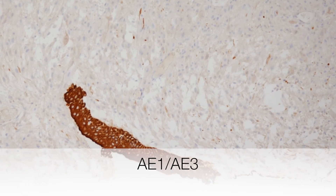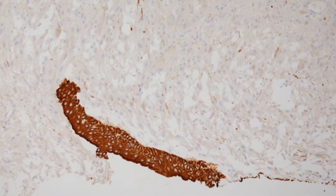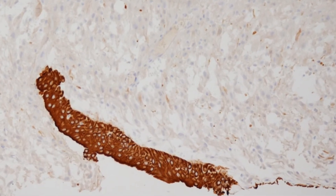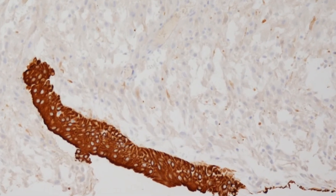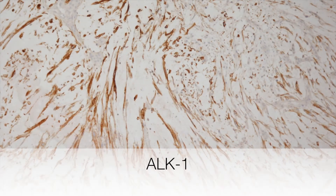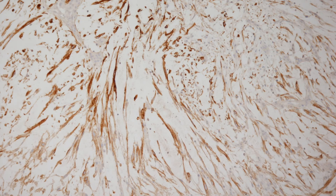This is the AE1/AE3 stain. You can see that the urothelium is positive. And here is the stain that gives away the diagnosis — it is the ALK1.